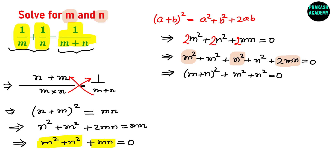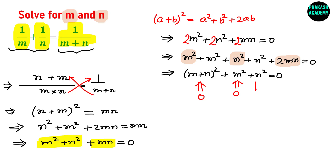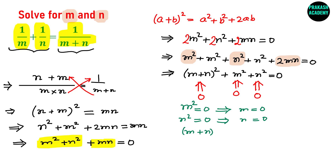Now, we have a sum of three squares equals 0. Since the square of each term is 0, each individual term must be 0. So this term is 0, this term is 0, and this term is 0. This gives us M square equals 0, meaning M equals 0; N square equals 0, meaning N equals 0; and (M plus N) square equals 0, which also means M equals 0 and N equals 0.